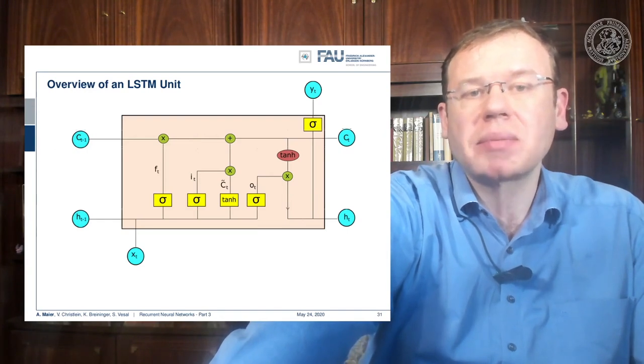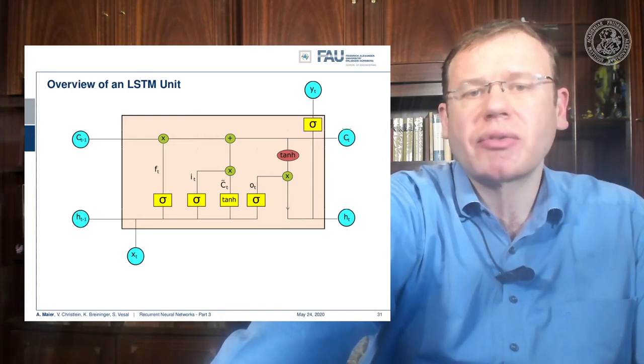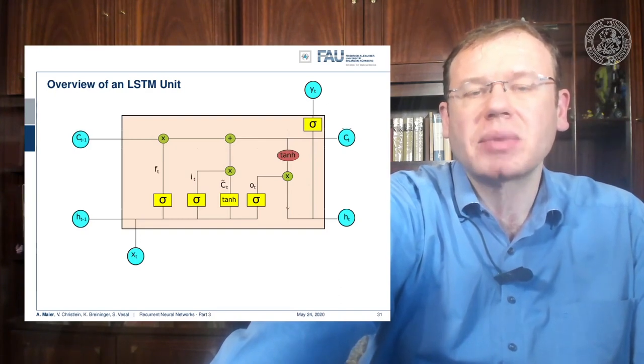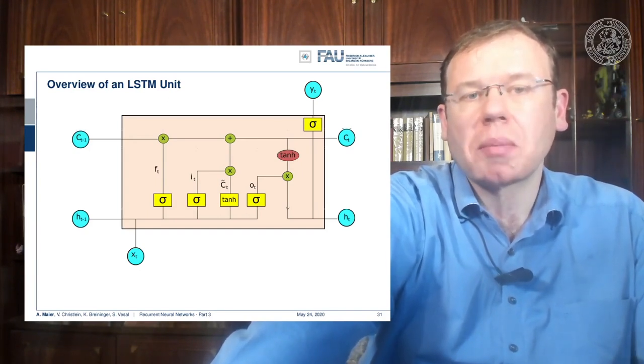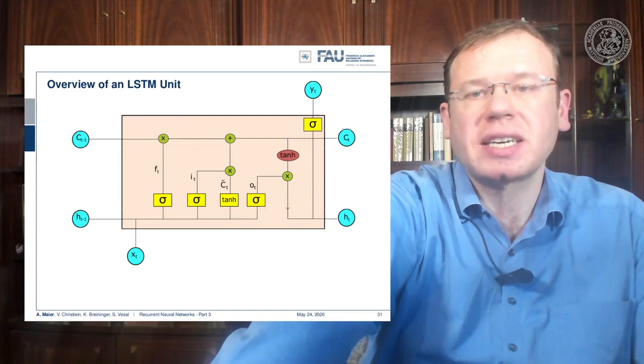Again we have some input X, then we have quite a few activation functions and we somehow combine them, and in the end we produce some output YT. But this unit is much more complex than what we've seen previously in the Elman cell.